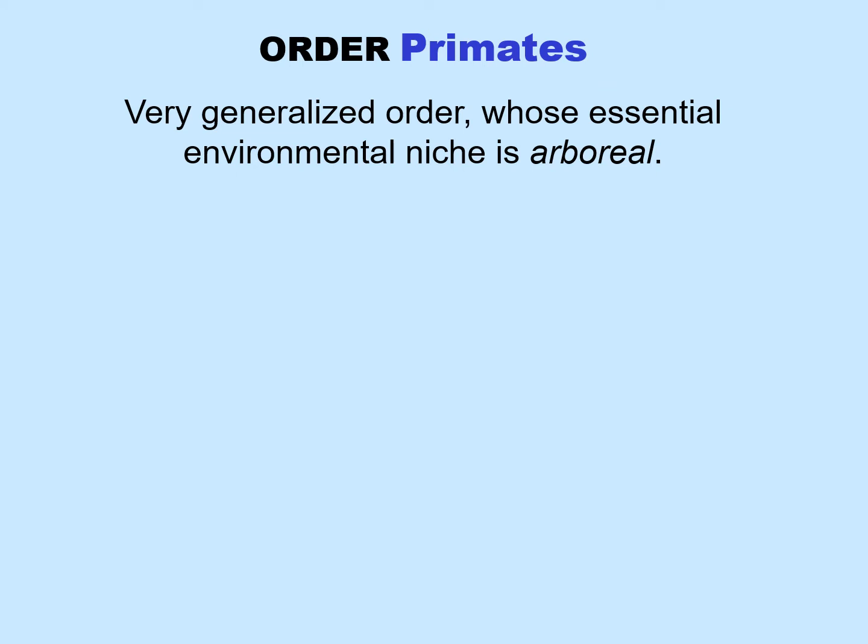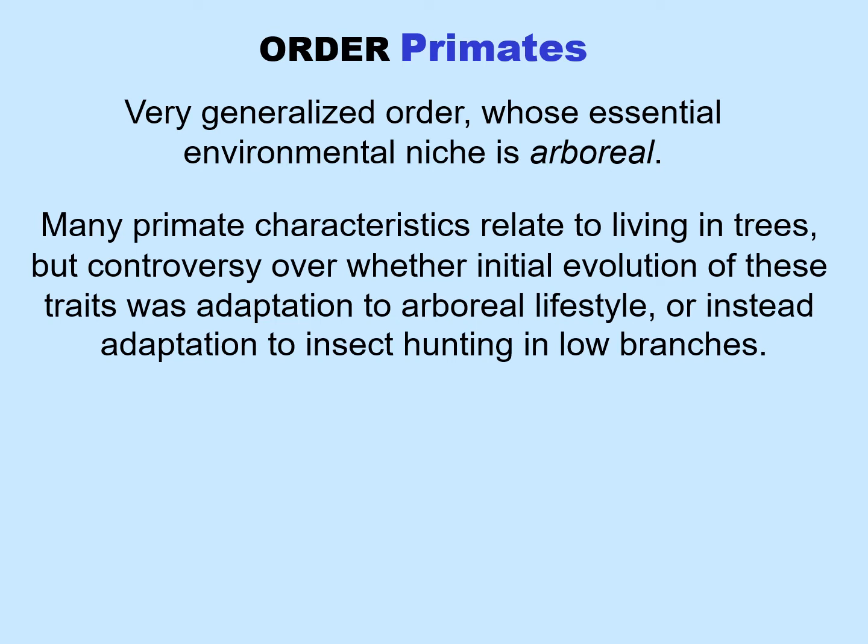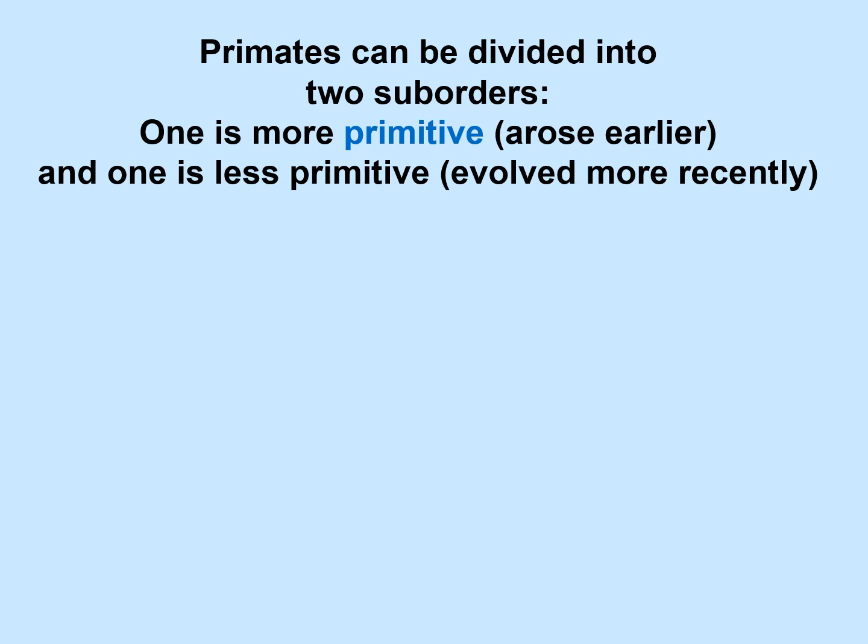Looking more specifically at the order of primates, we see a very generalized order whose essential environmental niche is arboreal — meaning living in trees. Many primate characteristics relate to living in trees, though controversy exists over whether initial evolution of these traits was adaptation to an arboreal lifestyle or instead adaptation to hunting insects in low branches. Primates can be divided into two suborders: one more primitive, arising earlier and retaining early characteristics, and one less primitive, evolved more recently.